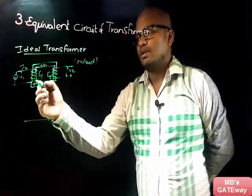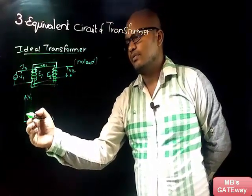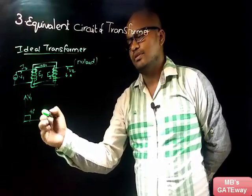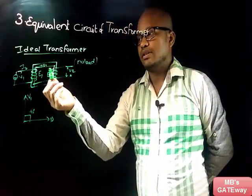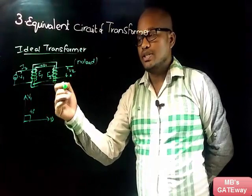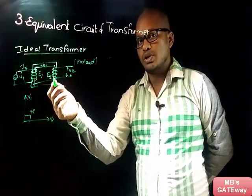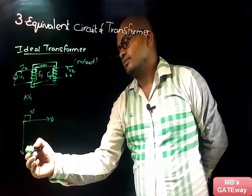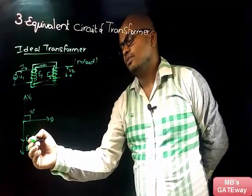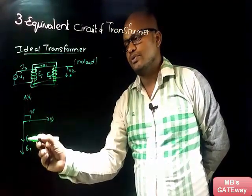Now let's draw the phasor diagram. Since the primary winding is inductive, V1 will be exactly 90 degrees with respect to flux phi. We know that a transformer provides 180 degrees phase displacement between input voltage V1 and output voltage E2. In the phasor diagram, E1 and E2 are represented, and for a step-down transformer E2 is less than E1.